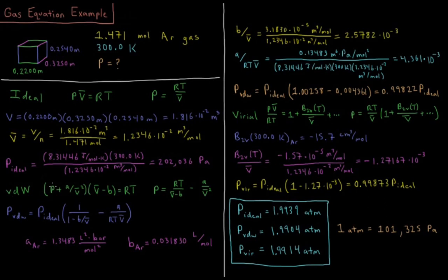For the Van der Waals Equation of State, we have P plus A over V-bar squared times V-bar minus B equals RT. So rearranging that for pressure, we get P equals RT over V-bar minus B minus A over V-bar squared.